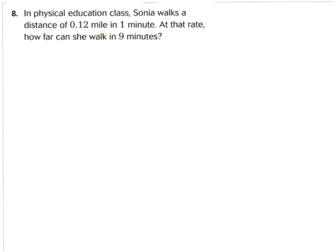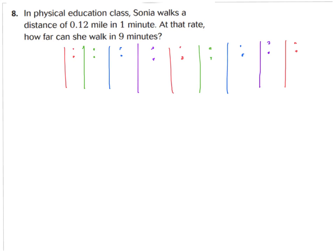Let's go down to question 8. It says: in physical education class, Sonia walks a distance of 12 hundredths of a mile in 1 minute. At that rate, how far can she walk in 9 minutes? So we need 9 groups of 12 hundredths to figure out how far she can walk. Go ahead and pause the video — show a model of 9 groups of 12 hundredths and add them up together. Okay, I did a quick sketch drawing of 9 groups of 12 hundredths. You can see here: 1 group, 2 groups, 3 groups, 4 groups, 5, 6, 7, 8, 9 groups of 12 hundredths.